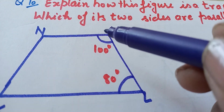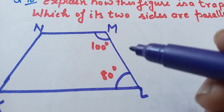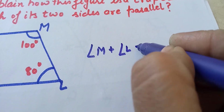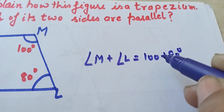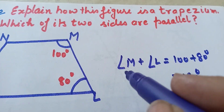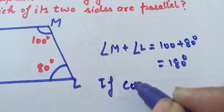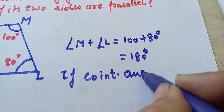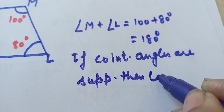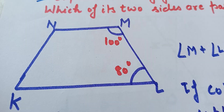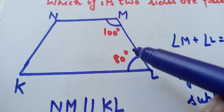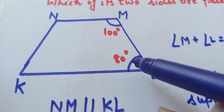First of all we will prove one pair of opposite sides parallel. For that, angle M plus angle N: 100 plus 80, the sum of these two angles is 180 degrees. These are co-interior angles, and we know that if co-interior angles are supplementary then the lines are parallel. It means NM is parallel to KL because the sum of these two co-interior angles is 180 degrees.